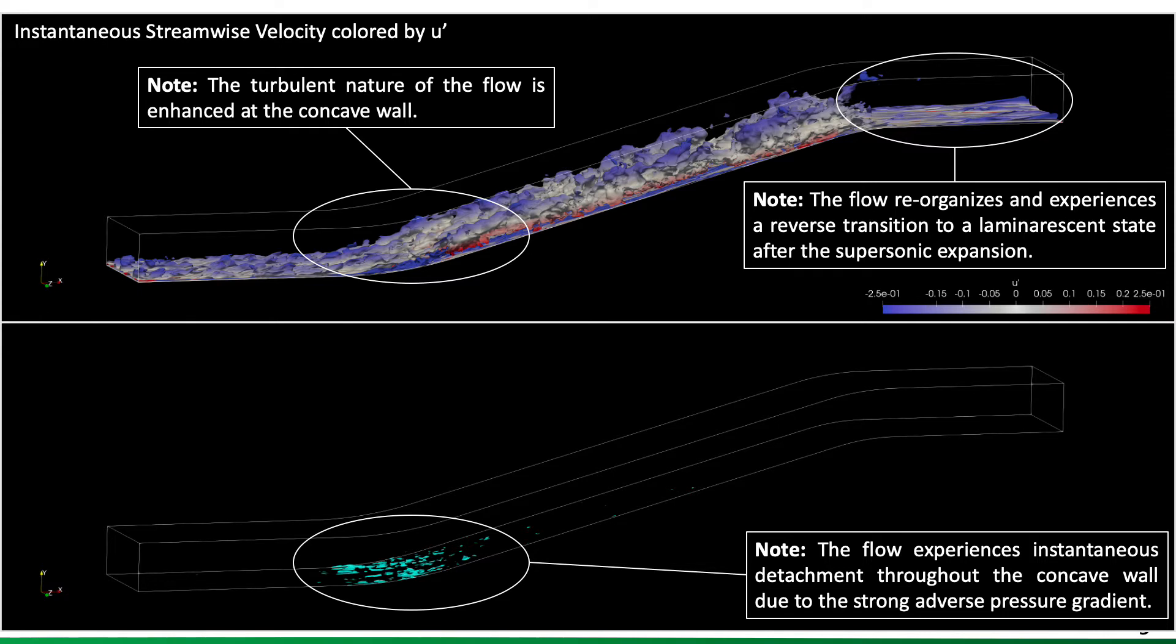And again, what you see in here in the top portion is the instantaneous velocity colored by the velocity fluctuation.